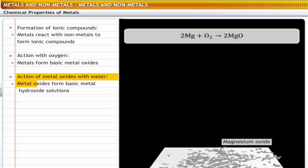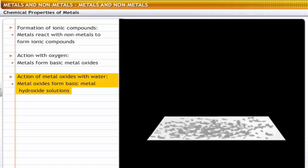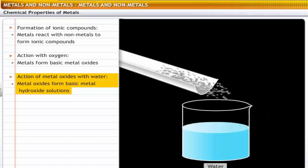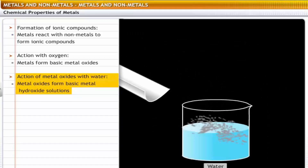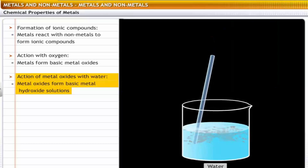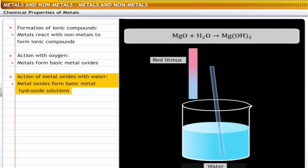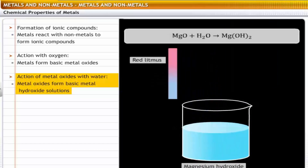Action of metal oxides with water: metal oxides dissolve in water to form basic metal hydroxide solutions. For example, magnesium oxide dissolves in water to form a strong basic solution of magnesium hydroxide.